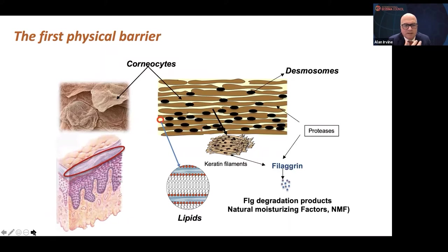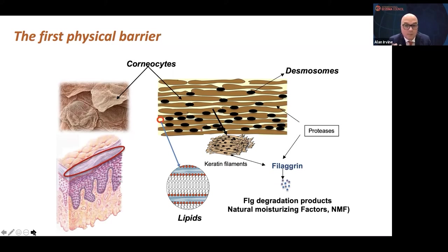Let's go back to what the first physical barrier is in normal healthy skin. It's the corneocytes — anucleate keratinocytes that form the outside barrier between us and our environment. They're held together by corneodesmosomes, and they aggregate lots of keratin filaments and many other epithelial differentiation complex proteins, including loricrin and involucrin. One of the key aggregating proteins is filaggrin, which breaks down to include natural moisturising factors, or NMF. And there's also the mortar of lipids in between all of these bricks, which provides so much of the physical barrier to stop us desiccating.